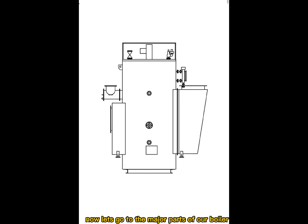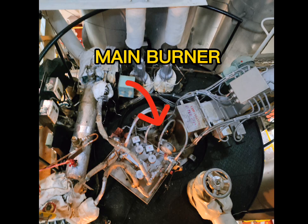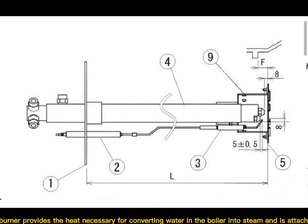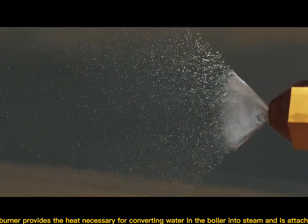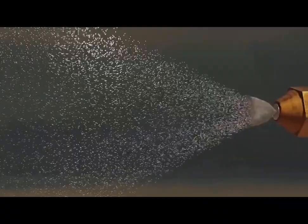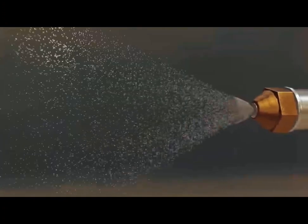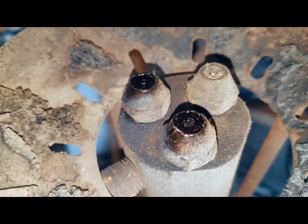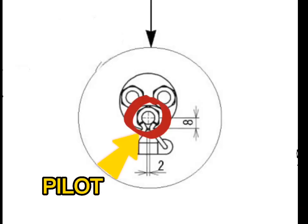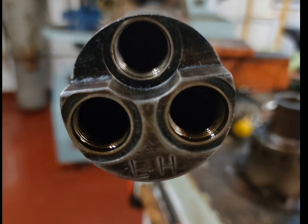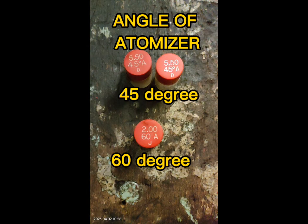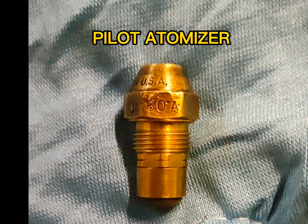Now let's go to the major parts of our boiler. Main burner: the boiler burner provides the heat necessary for converting water in the boiler into steam and is attached to the boiler. There are two types: pilot and main. The pilot burner is allotted a limited period of ignition during which it acts as a source of heat for the main burner, and once the time is over, the pilot flame goes off. A pilot burner consists of a detachable nozzle with five holes to atomize the diesel fuel for instant ignition.